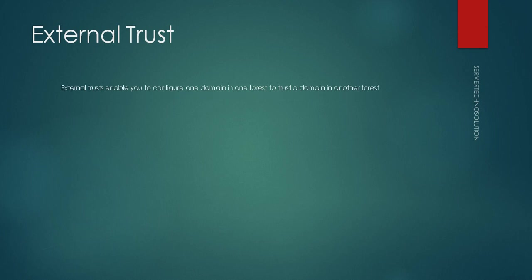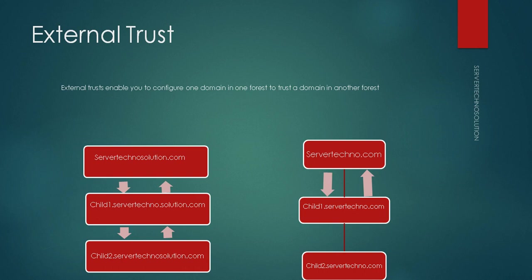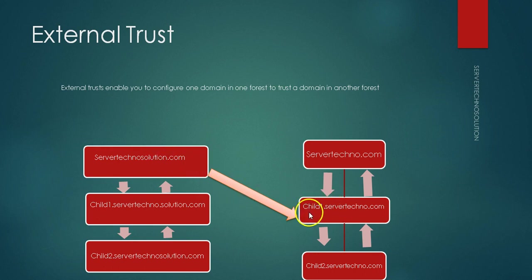External trust enables you to configure one domain in one forest to trust a domain in another forest. This is essentially the same as non-transitive trust — a non-transitive trust created between two domains of different forests is the same as external trust. For example, servertechnosolution.com needs some resources from child1.servertechnos.com; a trust is created only between those two domains, and there is no trust between the other remaining domains.